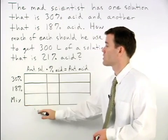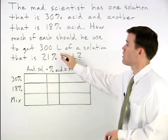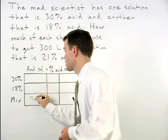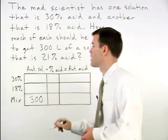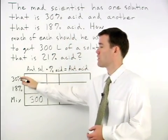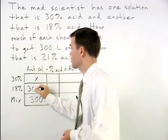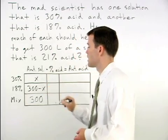So for our amount of solution column, we know that we have 300 liters in our final mixture. So we can split up the amount of solution for each of our original solutions as x and 300 minus x.